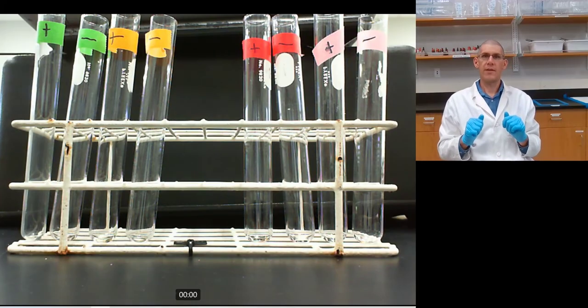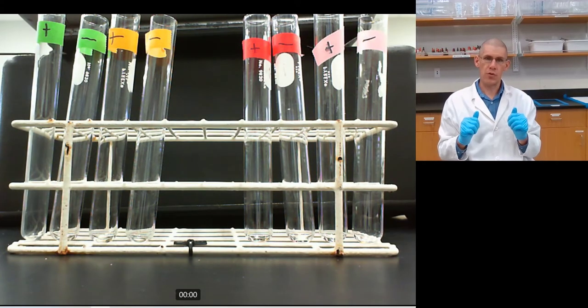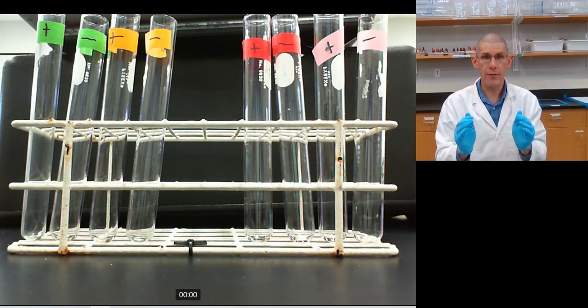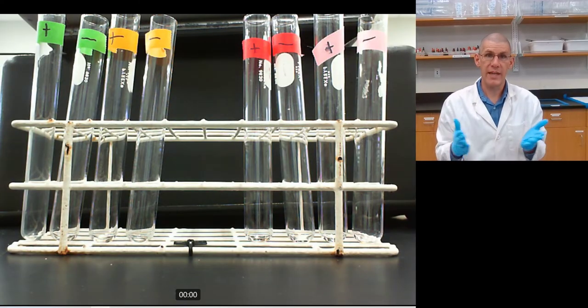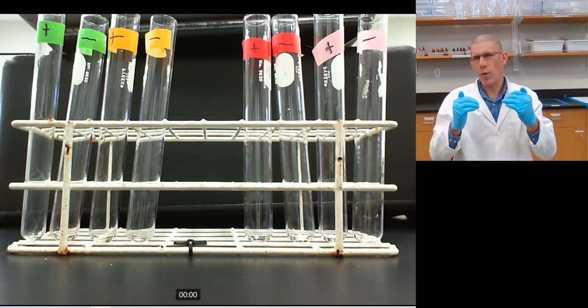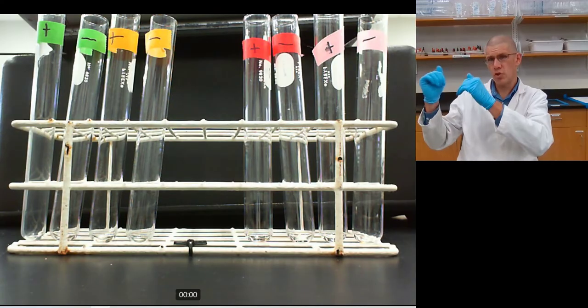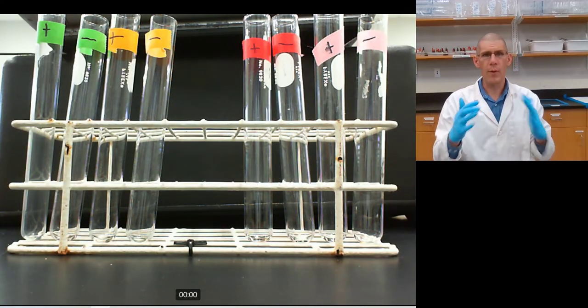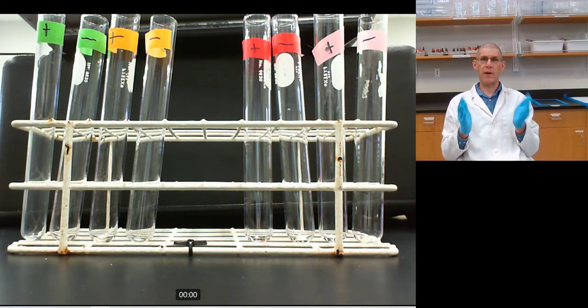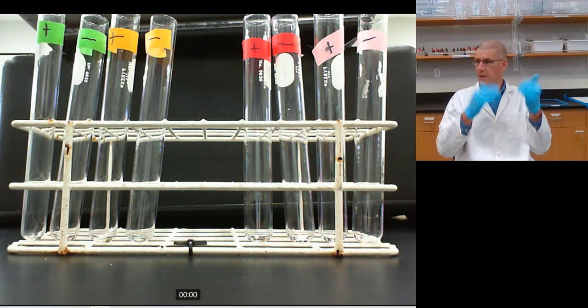The utility of having these as positive and negative controls is that we can compare them to what we're actually testing and see this is what a positive should look like, this is what a negative should look like, so then we can know whether ours is positive or negative based on whether or not it matches the positive or the negative.